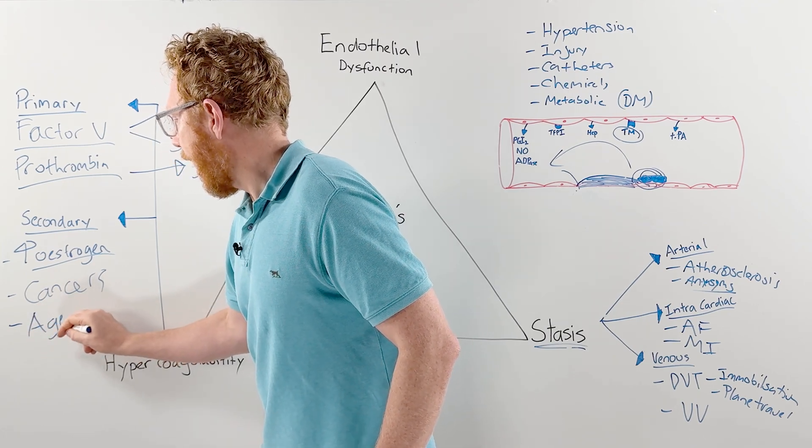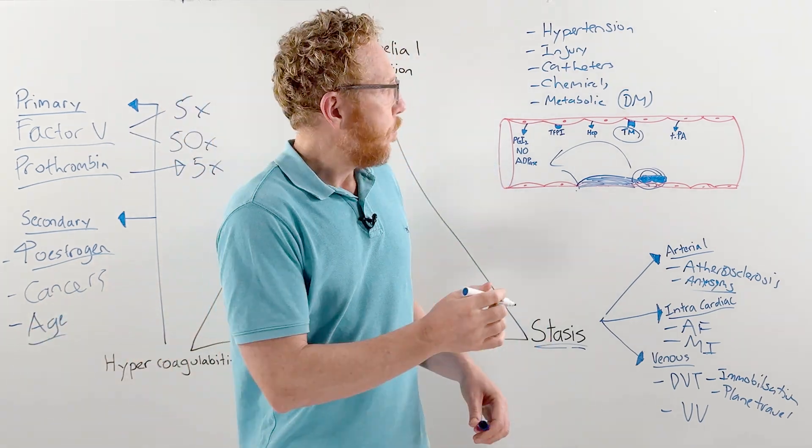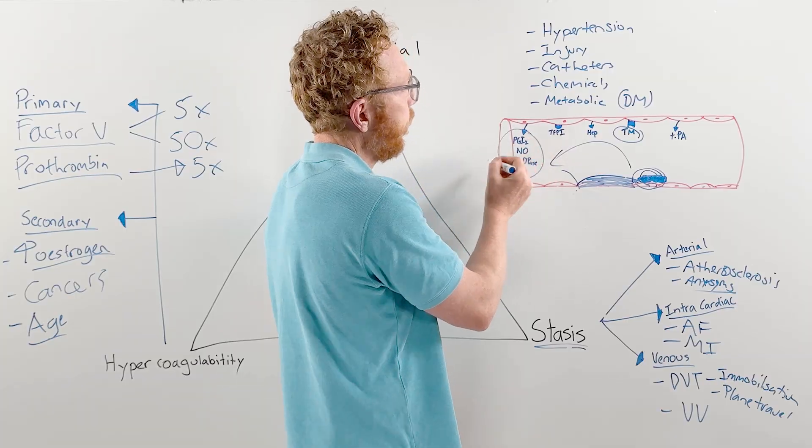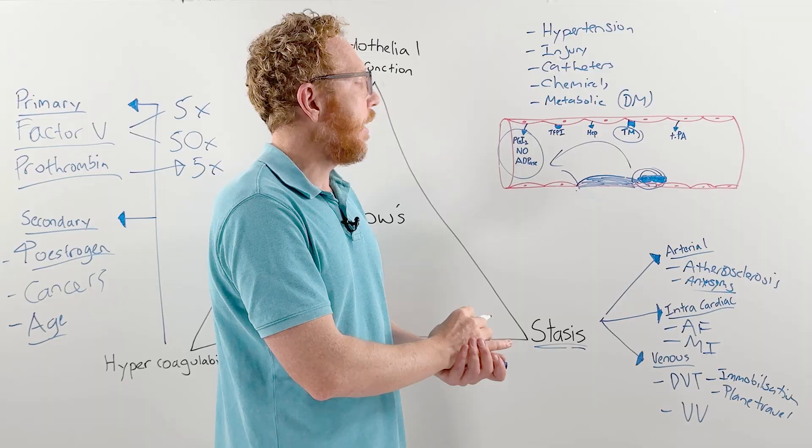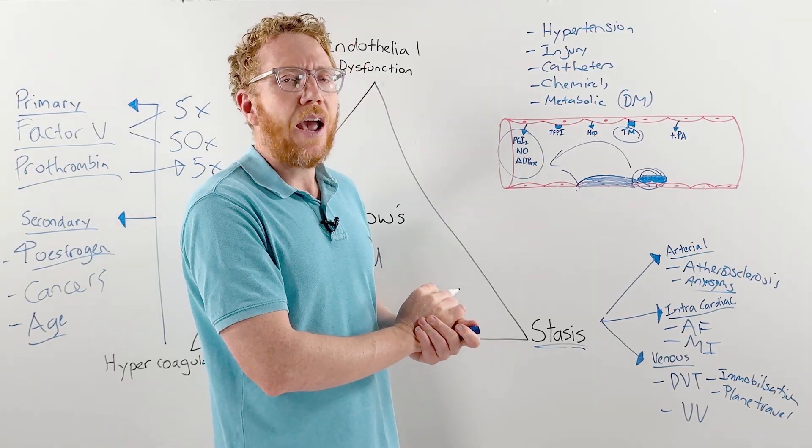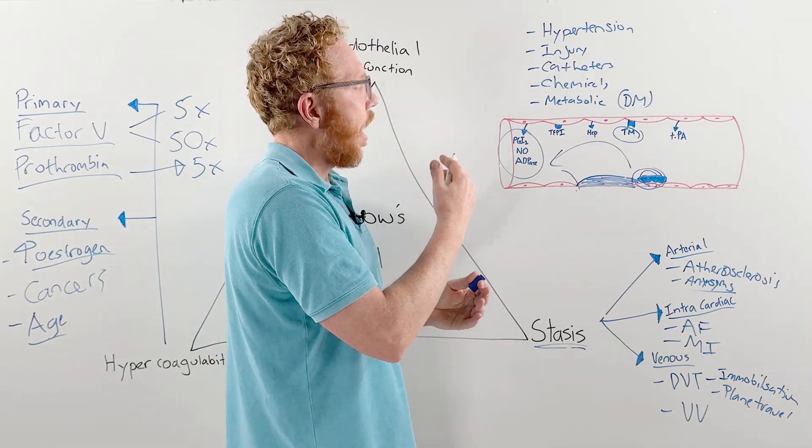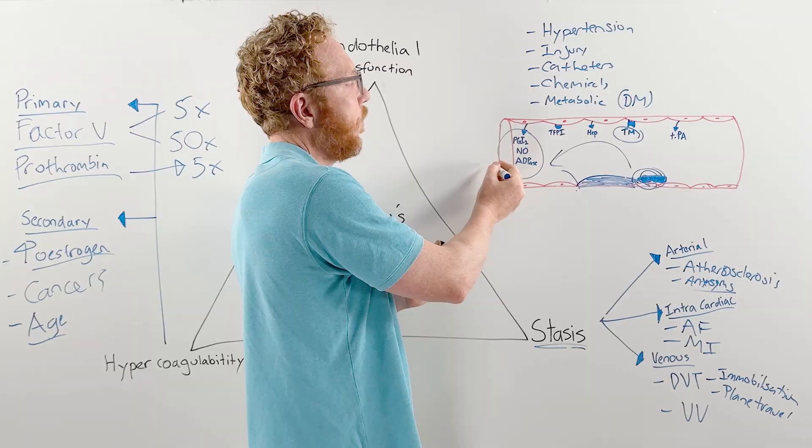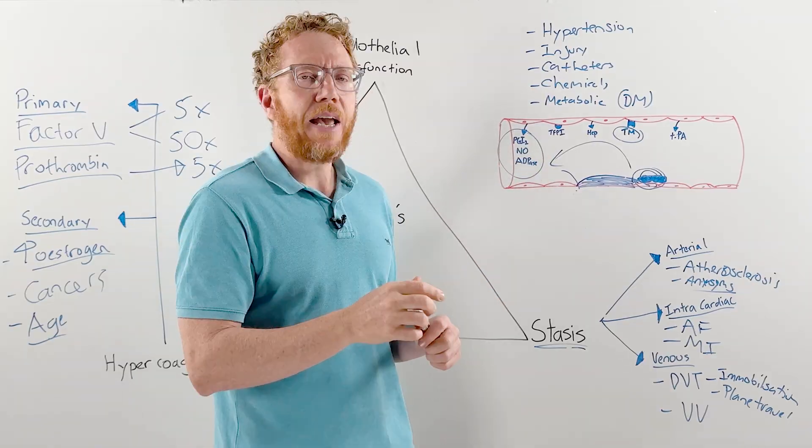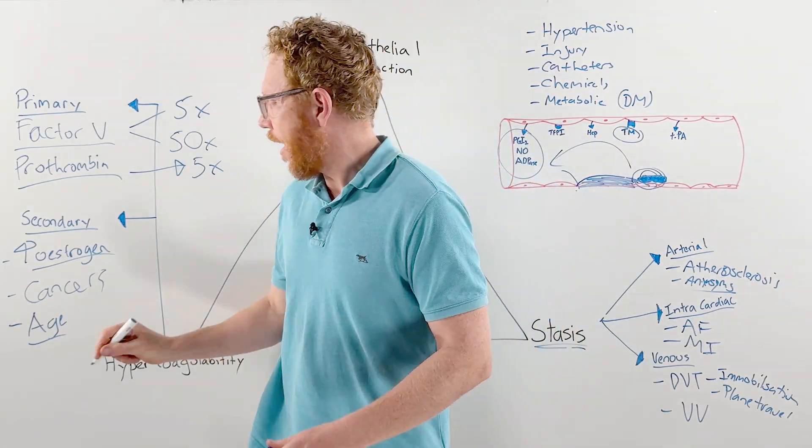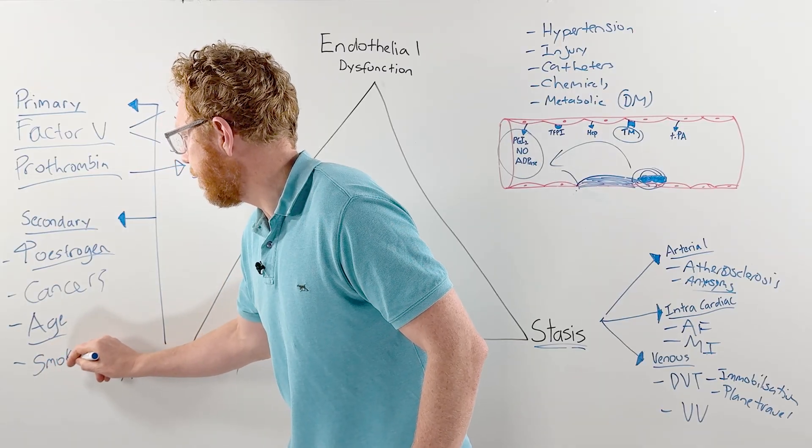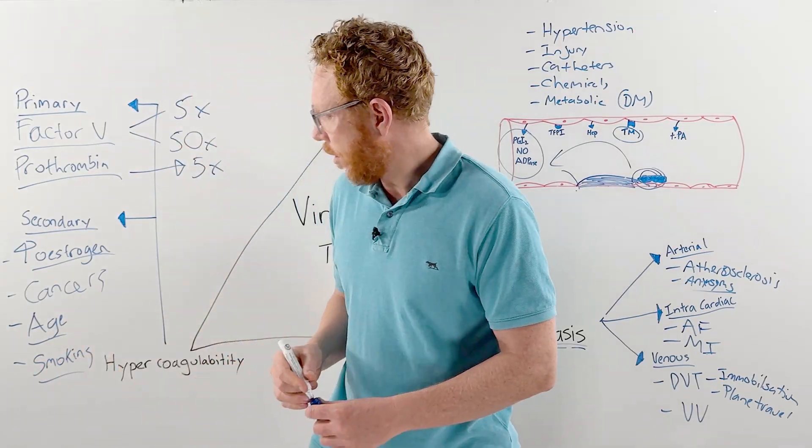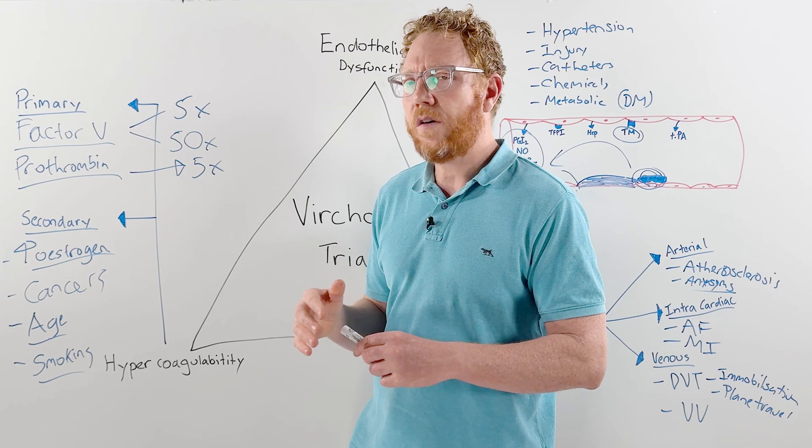We have aging, so older age particularly decreases the production of prostacyclin and nitric oxide, making platelet plug formation more likely. Finally, smoking is also a chemical that can activate the clotting proteins and increase the likelihood of coagulation.